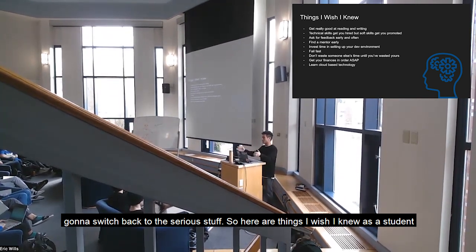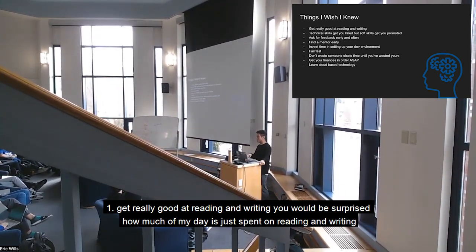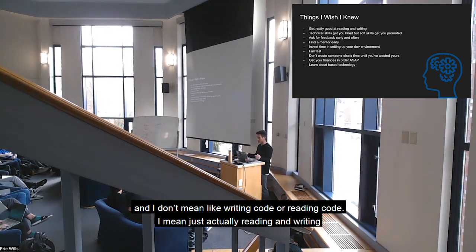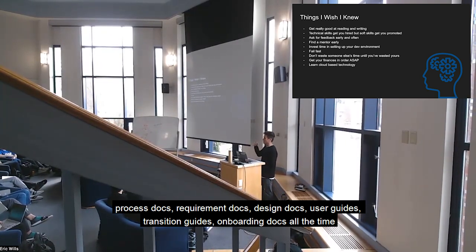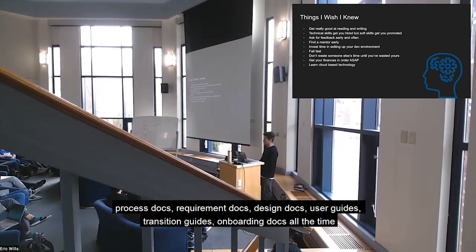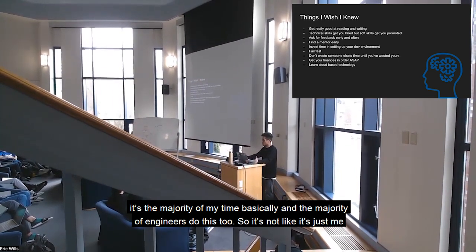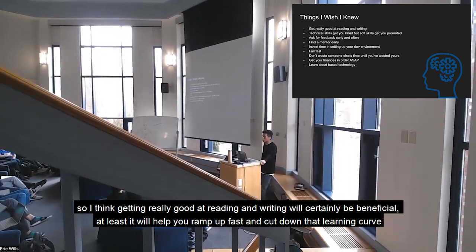Now we're going to switch back to being a little more serious. Here are the things I wish I knew as a student. One: get really good at reading and writing. You'd be surprised how much of my day is just spent on reading and writing — and I don't mean like coding, I mean just actually reading and writing. I'm reading and writing process docs, requirements docs, design docs, user guides, transition guides, onboarding docs all the time. It's the majority of my day, and the majority of engineers do this. So getting really good at reading and writing will serve you really well. It'll help you ramp up very fast and cut down that learning curve.